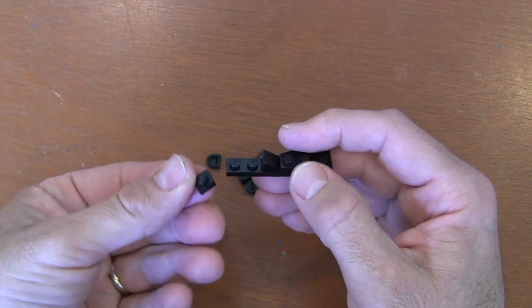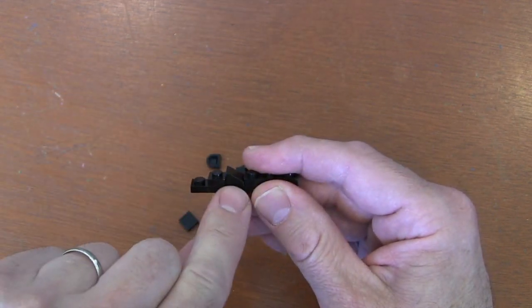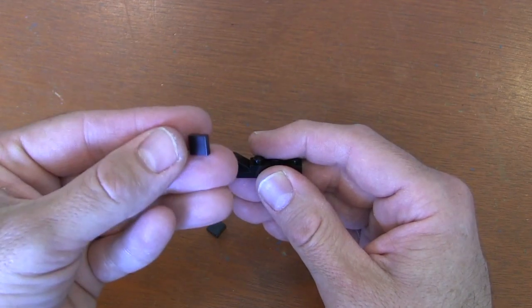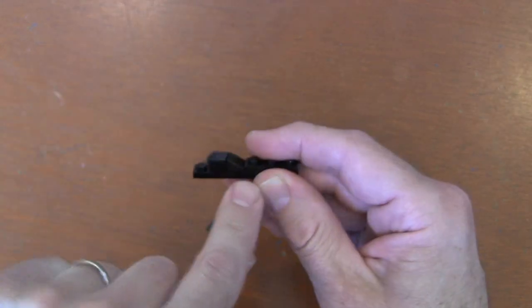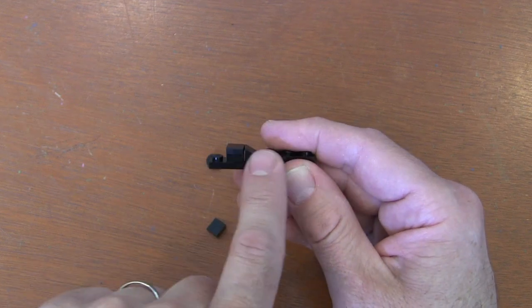On the next stud, I'm going to get a 1x1 plate. Put that down. When I put it down, you'll see it's not quite as high as that slope piece. I'm going to get a 1x1 tile piece. And now it's nice and smooth. By putting that 1x1 tile on our 1x1 plate, we get a nice, smooth curve.